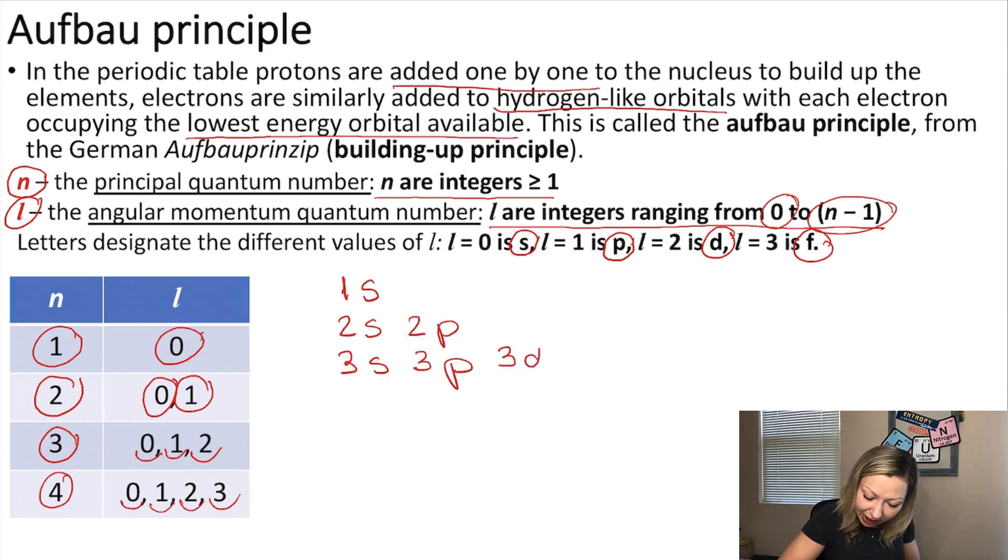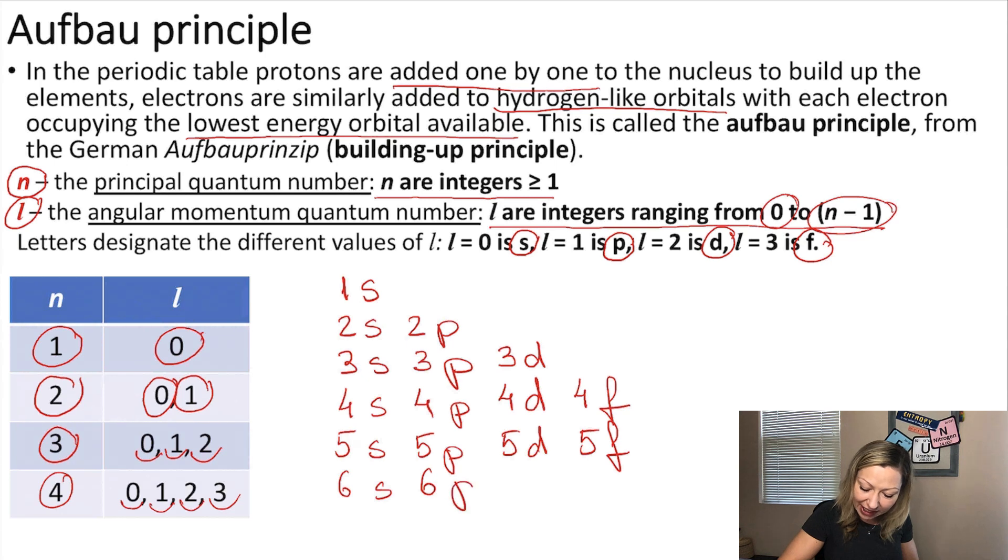So I'm going to have a 3d orbital, 4s, 4p, 4d. And when n equals four, I can have an F orbital, which is the 4f in this case. Let's go to 5s, 5p, 5d, 5f. Then n equals six: 6s, 6p, 6d, 6f. And let's do a couple of sevens: 7s, 7p, 7d.